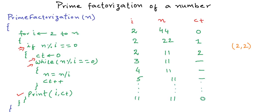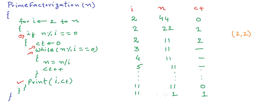We continue like this because 11 is not divisible until we reach i equal to 11. Now 11 divides 11, n becomes 1, count becomes 1. Since 11 cannot divide 1, we print 11 and 1. After this, we exit the for loop because i now becomes greater than n.